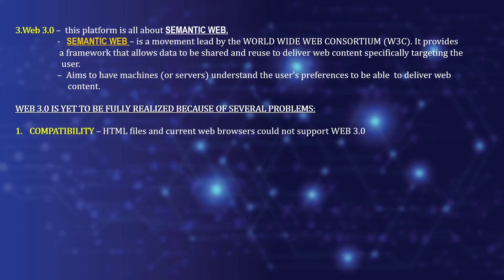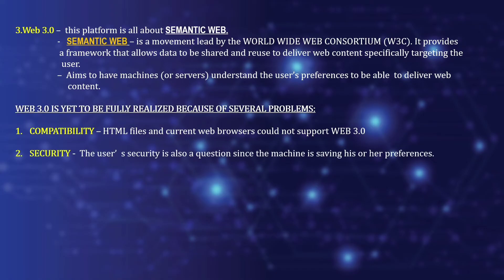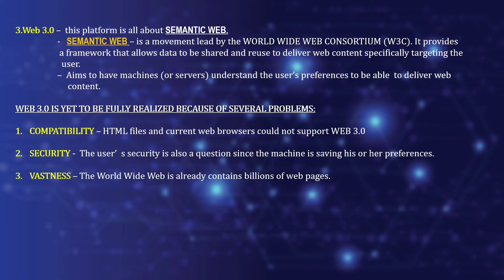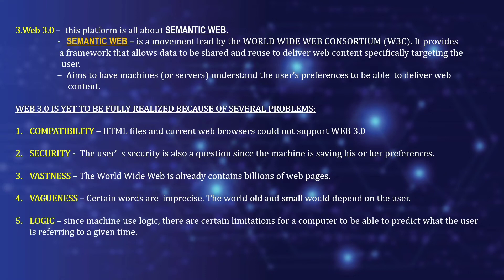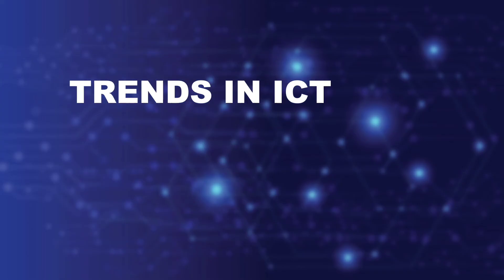Web 3.0 has yet to be fully realized because of several problems. First is compatibility — current HTML files and web browsers cannot support Web 3.0. Next is security — the user's security is a concern since the machine is saving their preferences. Then there is vastness — the World Wide Web already contains billions of web pages. Next is vagueness — certain words like 'old' or 'small' depend on the user's interpretation. Finally, logic — machines have certain limitations in predicting what the user is referring to at a given time.